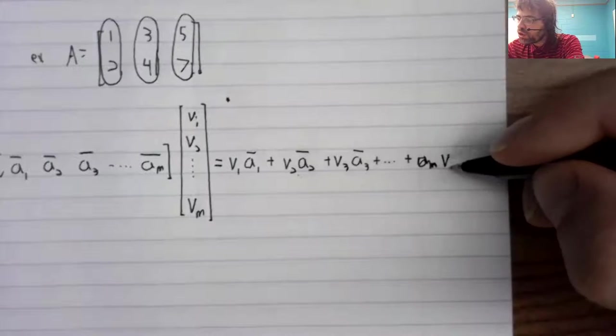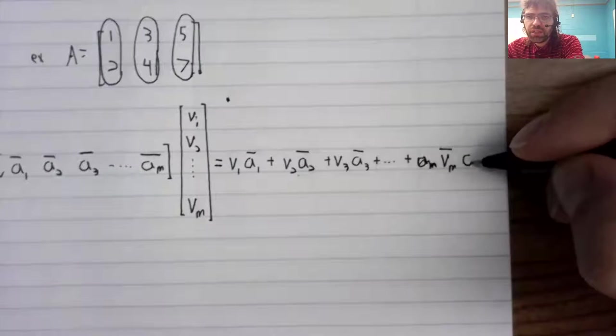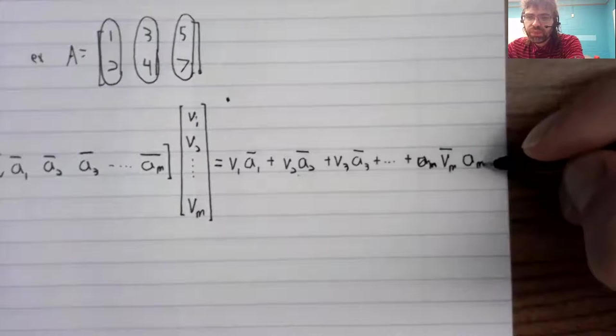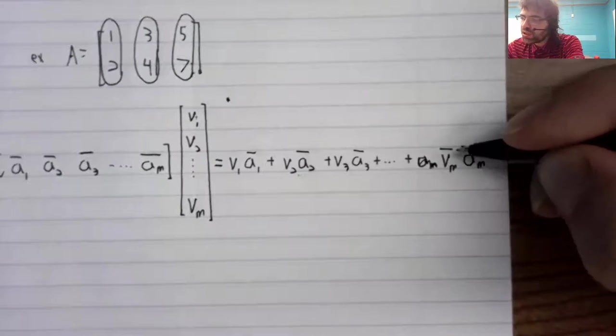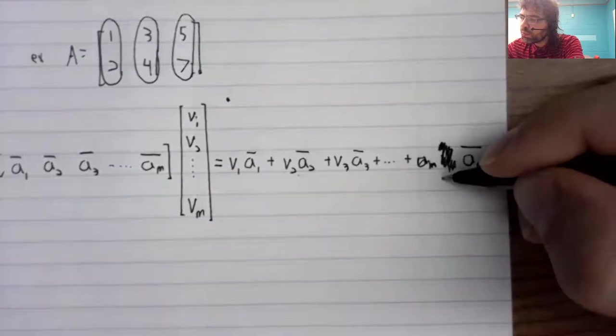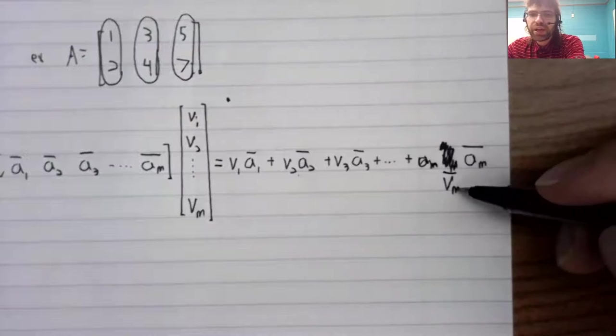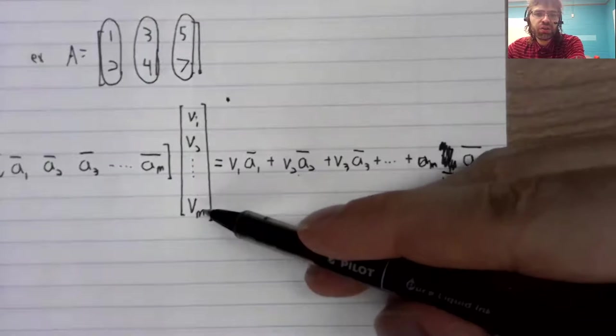When we multiply the mth entry. Sorry, that's not a vector. That's a real number. When we've multiplied the mth entry of the vector times the mth column.